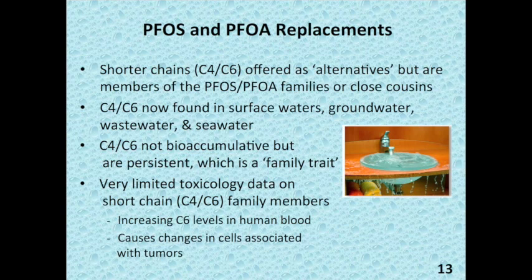PFOS and PFOA have no known degradation pathways in the environment that occur naturally under ambient conditions. To understand what it means for a chemical to have no known degradation pathways is to imagine the world as a bathtub where someone has turned on the faucet, but the tub has no drain — eventually concentrations build up with no way to reduce them. Identifying alternatives is challenging because there is limited PFOS toxicology data by comparison with which to make decisions. Recent work by scientists in Canada and Germany finds select C7 and C6 fluorochemicals in human blood, and shorter-chain fluorochemicals have the potential to cause changes in cells associated with tumors.